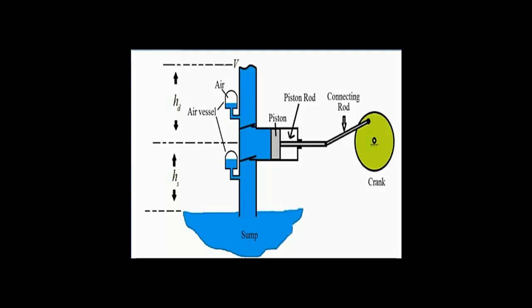Here we have mounted two air vessels — one is above the delivery valve and one is below the suction valve. An air vessel is a cast iron chamber which is connected with the suction pipe and delivery pipe. Compressed air is filled in both chambers, and both are mounted with the suction pipe and delivery pipe.